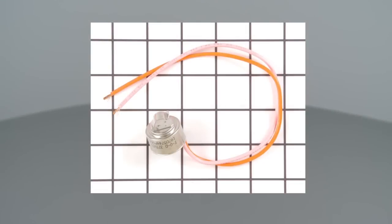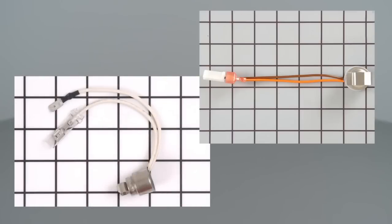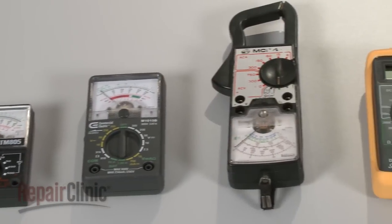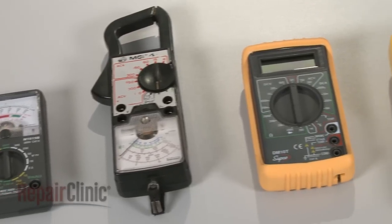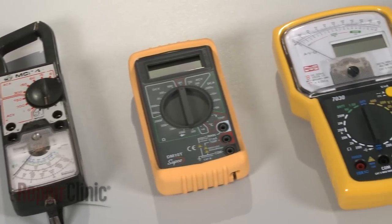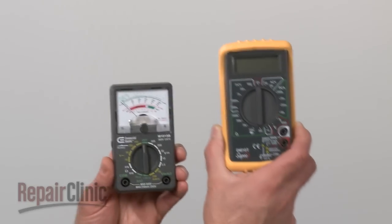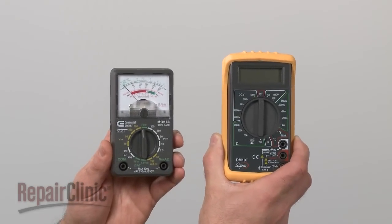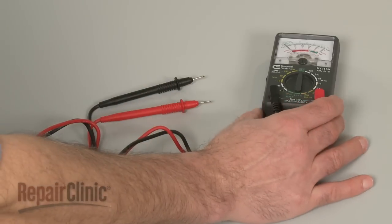If your appliance's thermostat has a closing temperature of 30 degrees Fahrenheit or above, you can easily test the part for continuity by using a multimeter. There are a variety of meters to choose from. For this demonstration, we will use both analog and digital models.